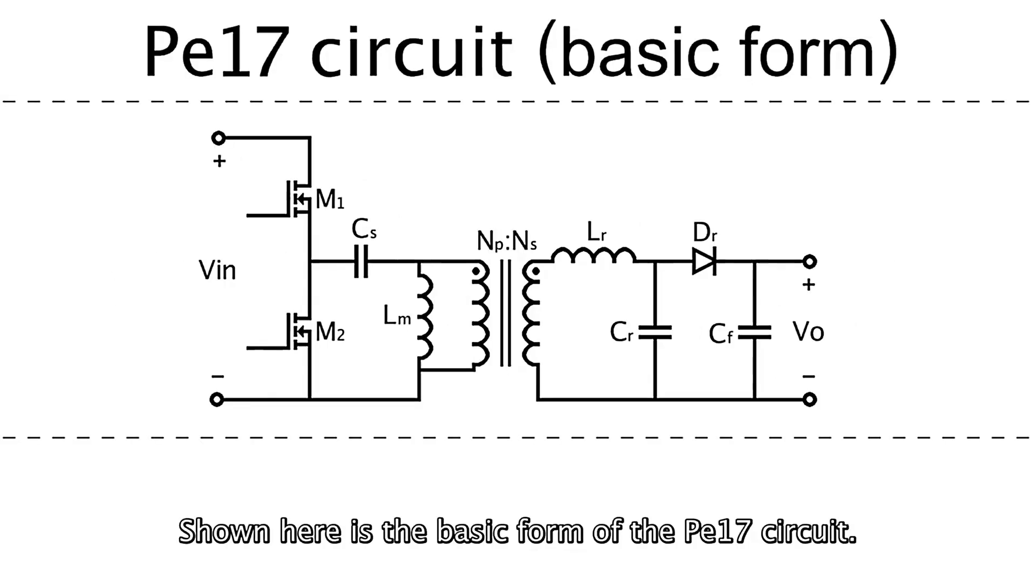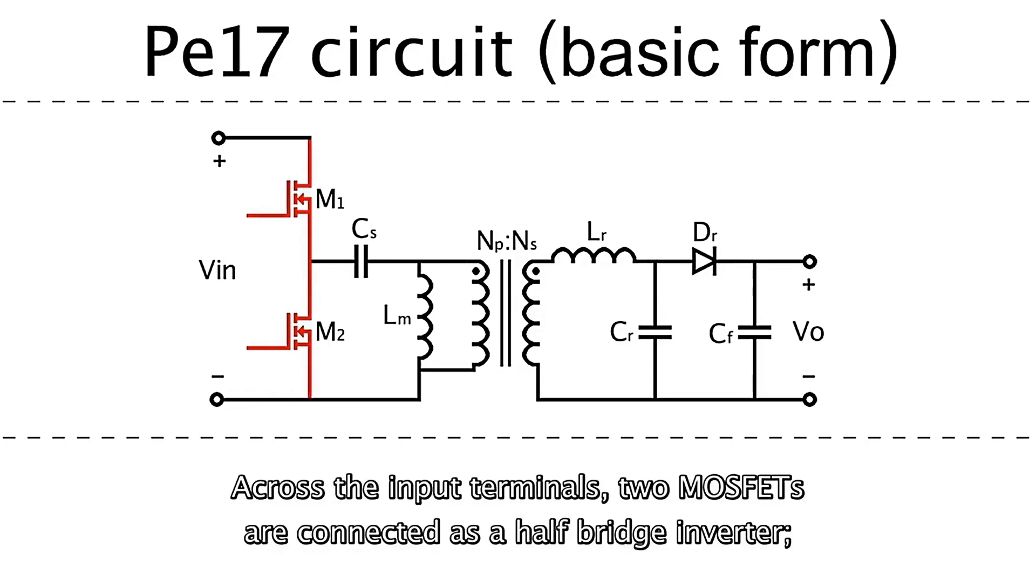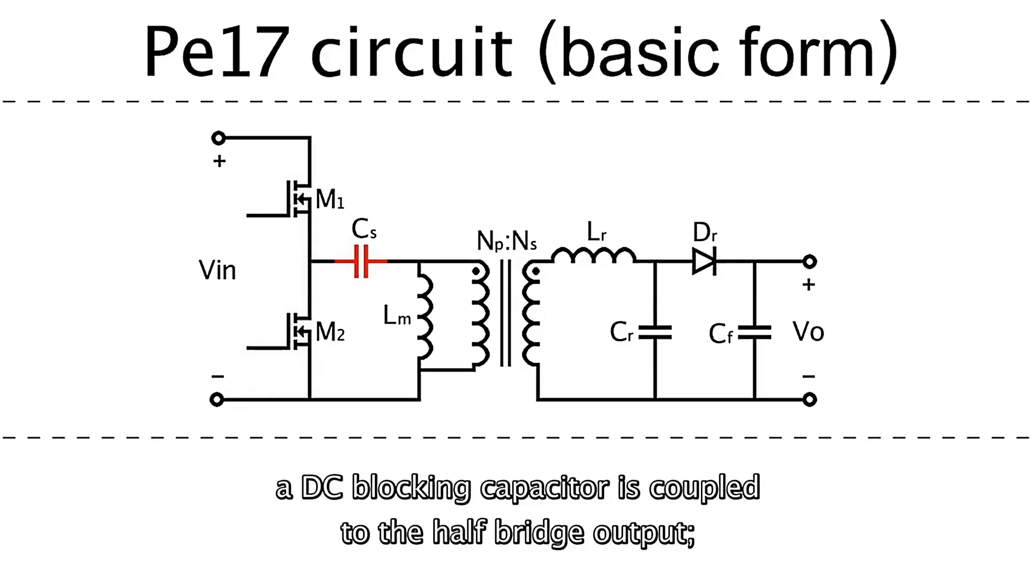Shown here is the basic form of the PE-17 circuit. Across the input terminals, two MOSFETs are connected as a half-bridge inverter. A DC-blocking capacitor is coupled to the half-bridge output.